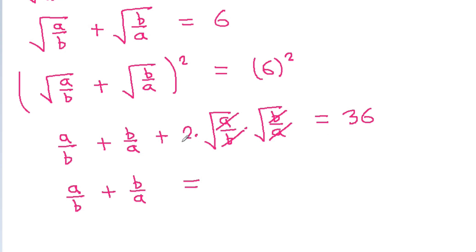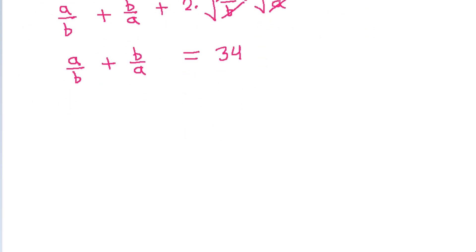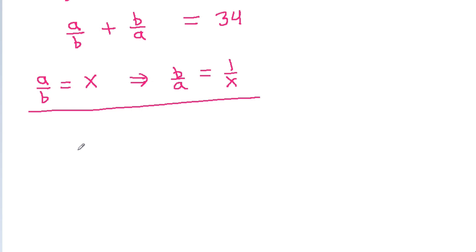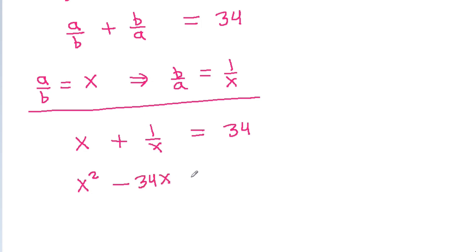If we take a by b equal to x, then b by a equals 1 by x. So the equation becomes x plus 1 by x equals 34, which gives x squared minus 34x minus 1 equals 0.